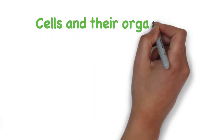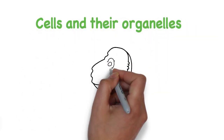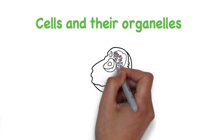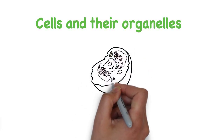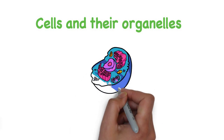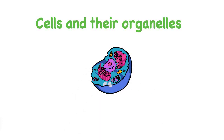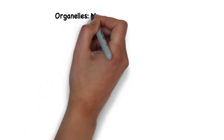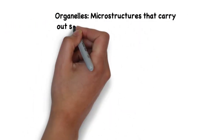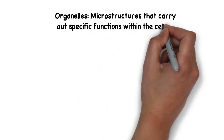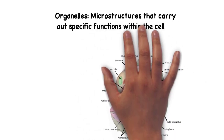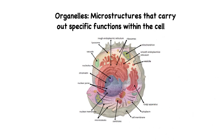Cells are the smallest structures of life and are of extreme importance for the medical profession, as many diseases have their effects at a cellular level. For example, viruses infect cells and hijack their machinery. Cells are made up of microstructures called organelles which carry specific functions within the cell. In this video we will talk about some of these organelles and their importance.